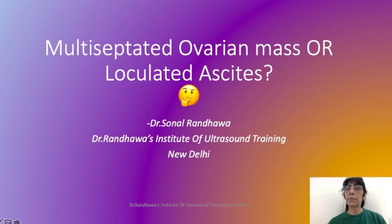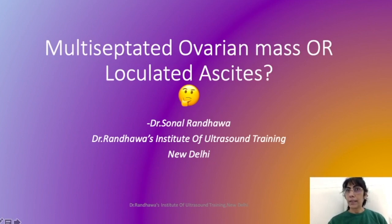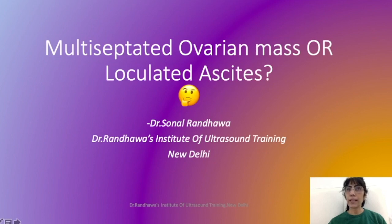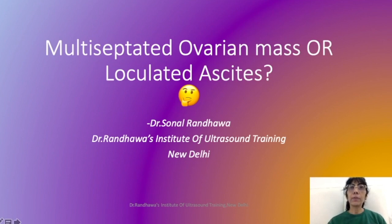I'll tell you one basic point that will help you know whether this is a multiseptated mass or loculated ascites. A mass is a space-occupying area, so when there is a space-occupying area, what happens to the surrounding bowel loops and organs? They will be pushed aside. As a result, when you see a multiseptated mass, you will not see any organ entrapped within it or bowel loops floating within it — everything would be on the sides. It would be a clear mass.